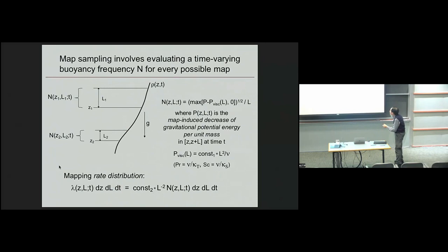We have just some arbitrary density profile. This one happens to be unstable. What we say is that the map has two parameters, sort of the bottom location in Z and a size. What we need to do is to understand for every possible L and Z, what would be the rate of occurrence of that particular map. The obvious choice is the buoyancy frequency, the map-induced increase of gravitational potential energy when you do one of these triplet maps.